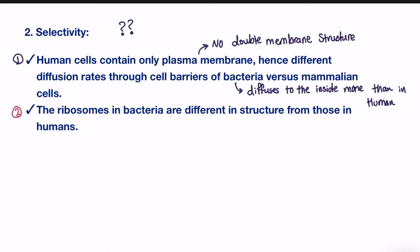The second reason is that ribosomes in bacteria are different in structure from those in humans. As mentioned earlier, the ribosome in bacteria is a 70S particle, while in humans it is much bigger at 80S, and it has a much lower binding affinity for aminoglycosides compared to bacteria.